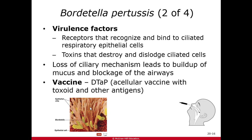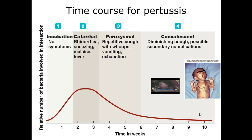Luckily it is totally preventable — we have a vaccine. We've talked about the DTaP vaccine: the D for diphtheria, the T for tetanus, and now the P for pertussis. It's an acellular pertussis vaccine — that's what the 'a' stands for. When testing for this bacteria, they do take a nasopharynx swab using a long, thin swab to get a sample from back there, since this bacteria sticks to the cells of the nasopharynx.